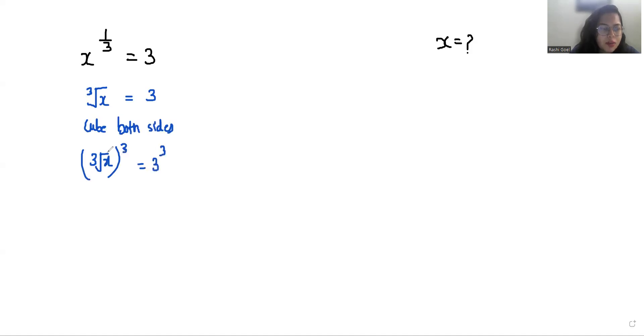3 cube. With the help of this cube, the cube root will eliminate, so x equals 3 cube which equals 27. So let's check: x power 1 by 3, and our x is 27 power 1